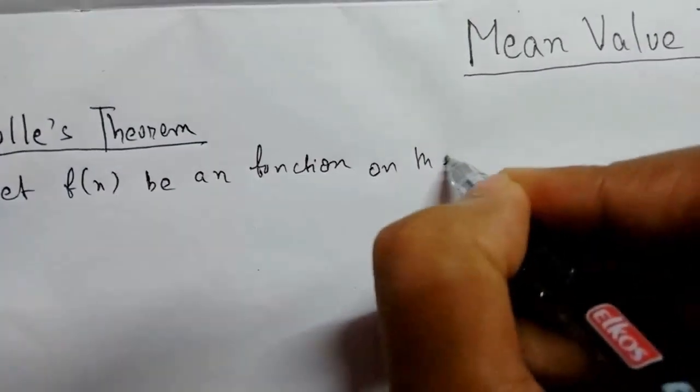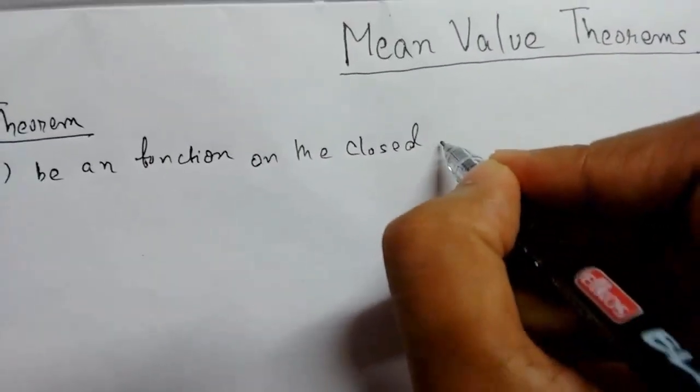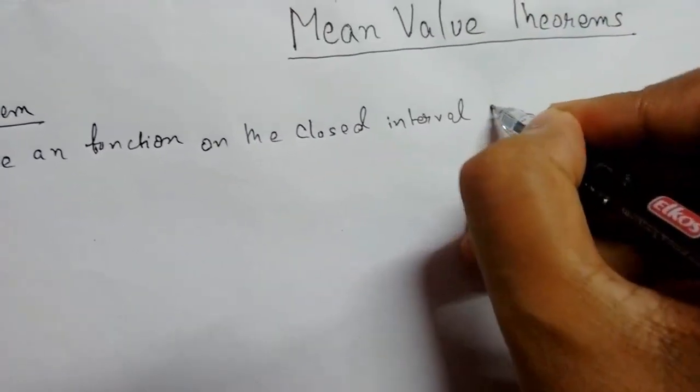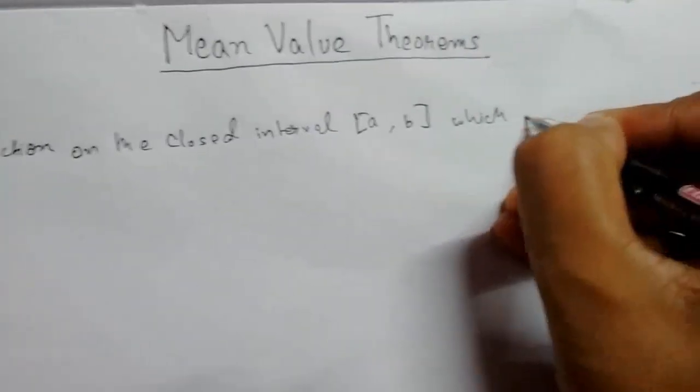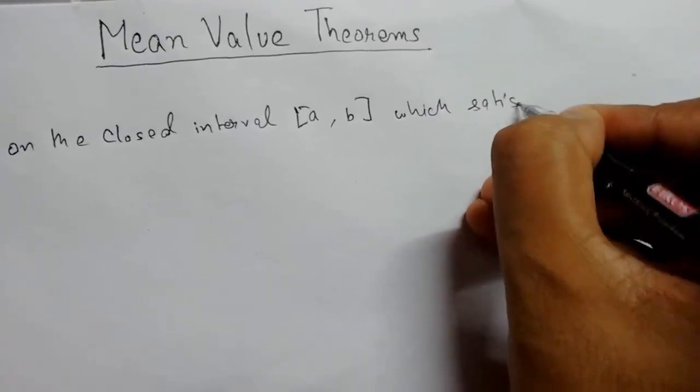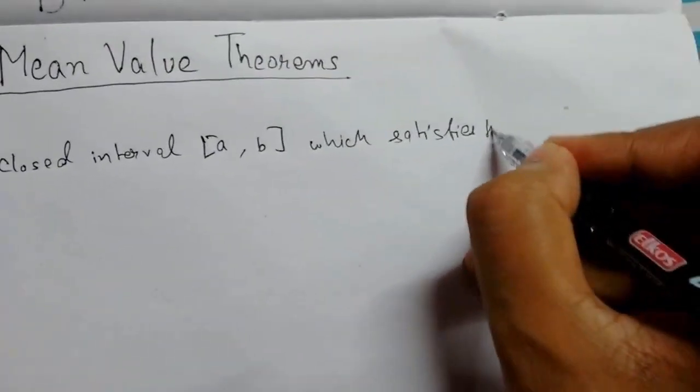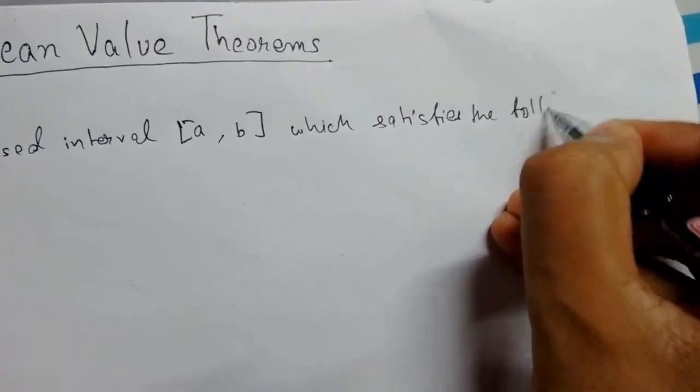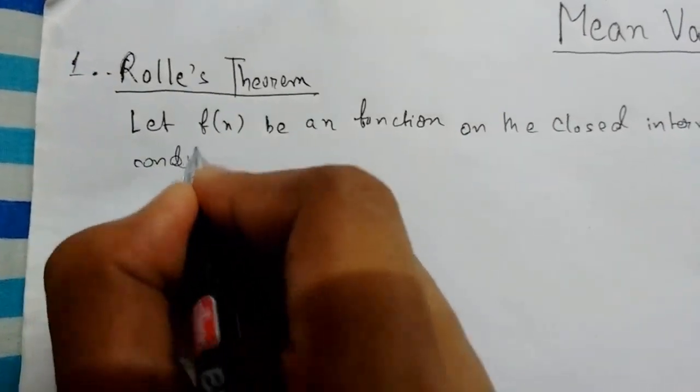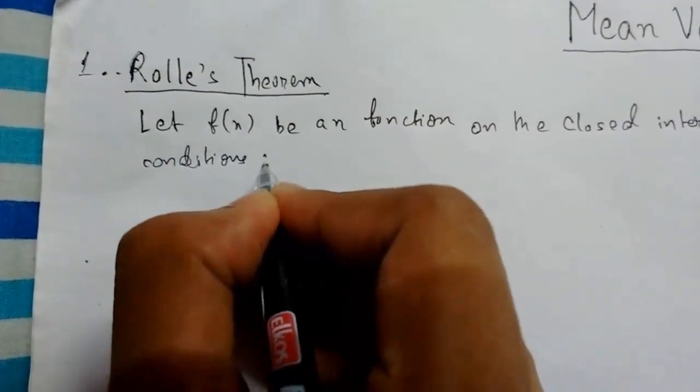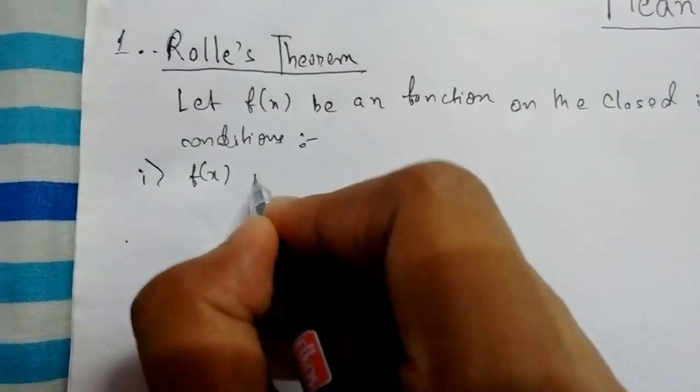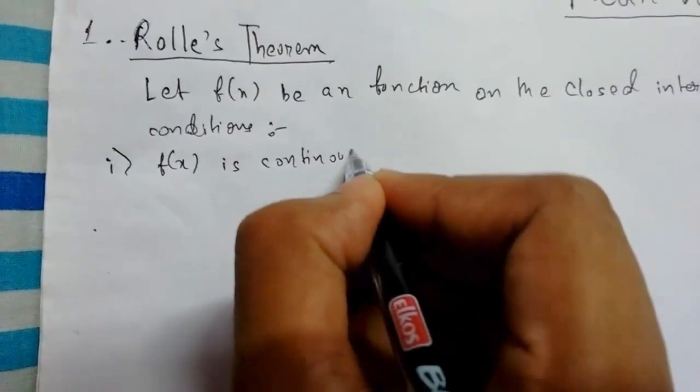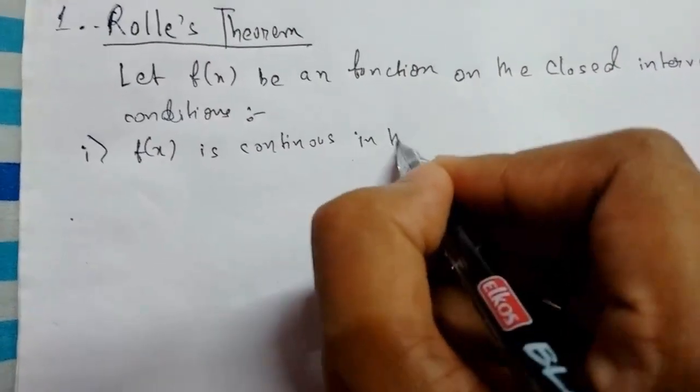Which satisfies the following conditions. So let us get on with the first condition: f(x) is continuous in the closed interval [a, b]. So the function must be continuous in the closed interval [a, b].